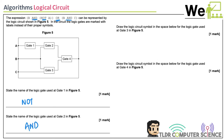Draw the logic gate for gate three — it's an AND gate. Flat on the left, curved on the right, two inputs and one output. Draw the logic symbol for gate four — it's an OR gate, which has the curved input side as well, two inputs, one output.